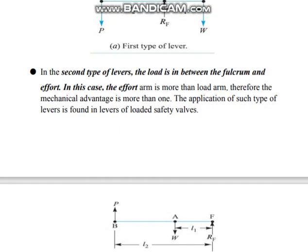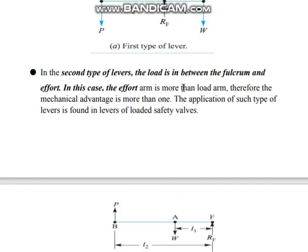In the second type of lever, the load is in the middle, the fulcrum is at one end, and the effort is at the other end. The effort arm is larger and the load arm is less, therefore mechanical advantage is more than one — there is benefit here too. The application of such levers is found in the lever-loaded safety valve used in boilers.